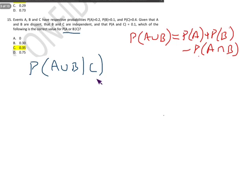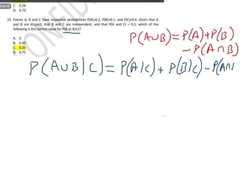The exact same thing stands when you've got a conditional probability. So this is actually the same thing as the probability of A given C plus the probability of B given C minus the probability of A intersect B given C.